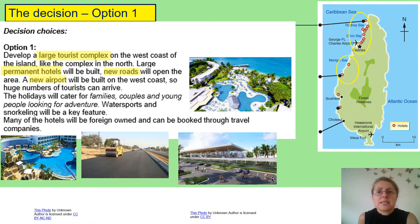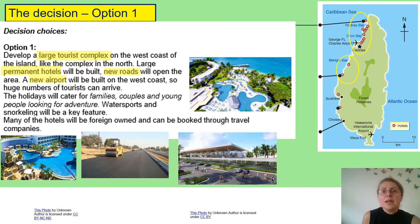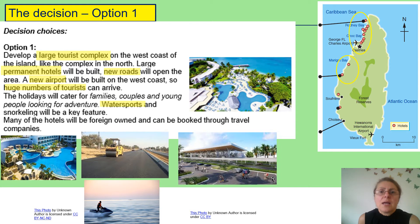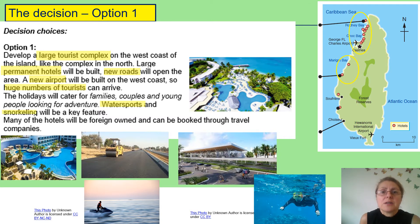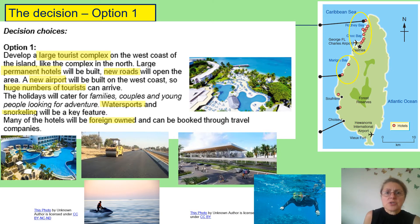Think of the jobs created, the disposable income coming in — remember, disposable income is money left over to spend on ourselves and our families after we've paid our bills. Think of the money the government will be able to make and how that could develop the island further. The holidays will cater for families, couples, and young people looking for adventure. Water sports and snorkelling will be a key feature, so we need to consider both the attractions and the negatives for the coral reefs.